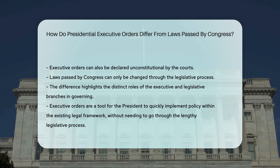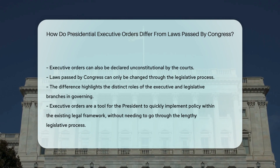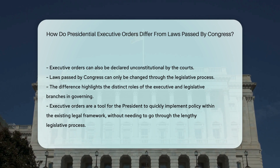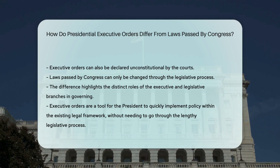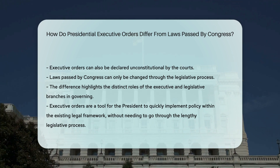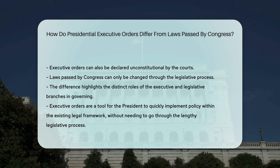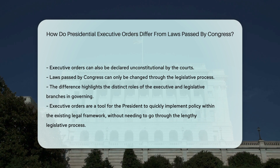While executive orders can be overturned by a subsequent president or declared unconstitutional by the courts, laws passed by Congress can only be changed through the legislative process.